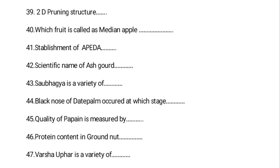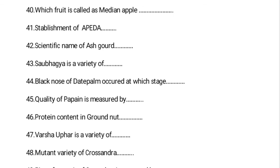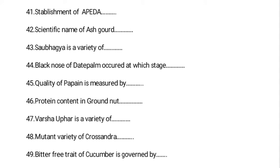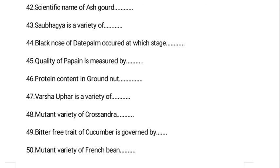The quality of papain is measured by Tyrosine units. Protein content in groundnut is 26 percent. Varsha Upahar is a variety of okra, resistant to Yellow Vein Mosaic Virus and tolerant to leaf hopper. Kanaka Dhara is a mutant variety of daily Crossandra. The bitter-free trait in cucumber is governed by a recessive gene. The mutant variety of French bean is Pusa Parvati, an X-ray mutant of Black Spot variety, developed by Dr. Gill, and is Mosaic and Powdery Mildew resistant.